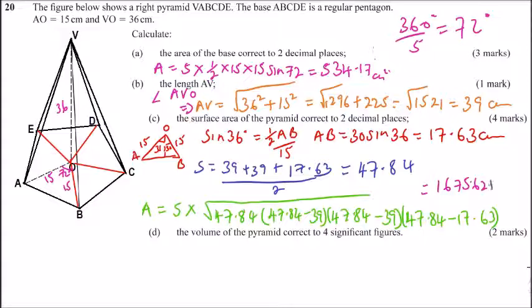You should get 1675.62, then you add to the area of the base, which we got is 534.17. So the total area equals 2210.19. This is centimeter squared.